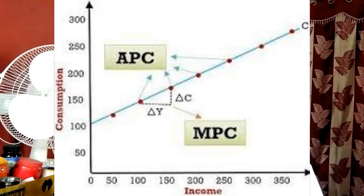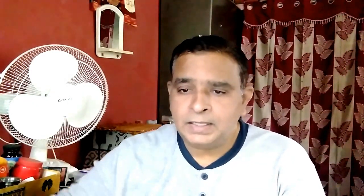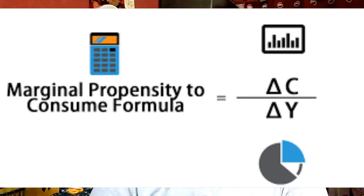APC, or average propensity to consume, is the ratio between total consumption and total income. MPC, or marginal propensity to consume, is the ratio between additional consumption and additional income. APC indicates consumption per unit of total income.